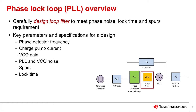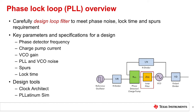The key parameters are: phase detector frequency FPD, charge pump current, VCO gain, PLL and VCO noise, spurs, and lock time. On TI.com we have an online tool called Clock Architect which can help find the total systems clock solution as well as loop filter design and simulation. If you have issues with the internet, no problem — PlatinumSim, which is an offline tool, can help with that.